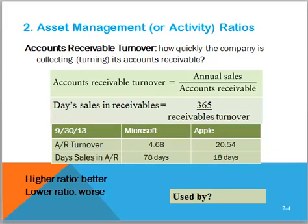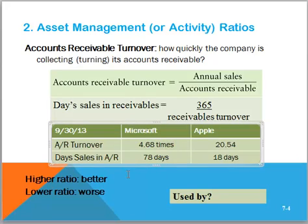A second type of ratios is what is called asset management or activity ratios — these are more a measure of speed. For example, the accounts receivable turnover measures how quickly the company is collecting or turning over its accounts receivable. The turnover is calculated by dividing annual sales by accounts receivable. The number of days sales in receivable is measured by taking 365 days and dividing by the receivables turnover you just calculated. Microsoft's accounts receivable turnover is 4.68 times per year. This can depend on the industry.